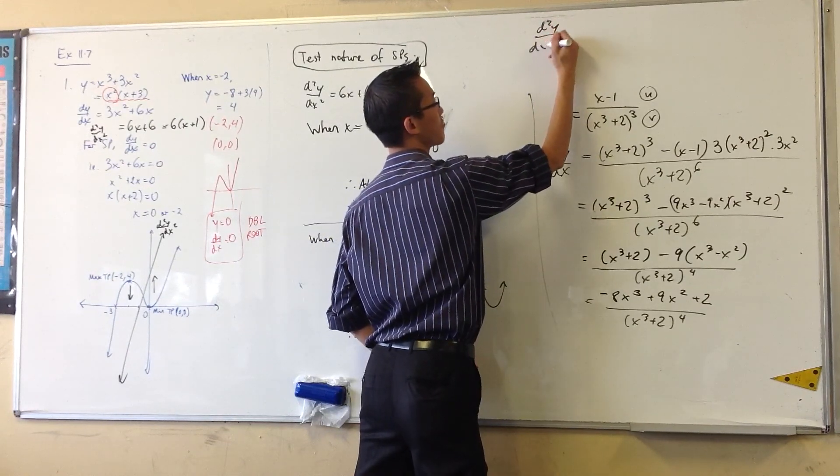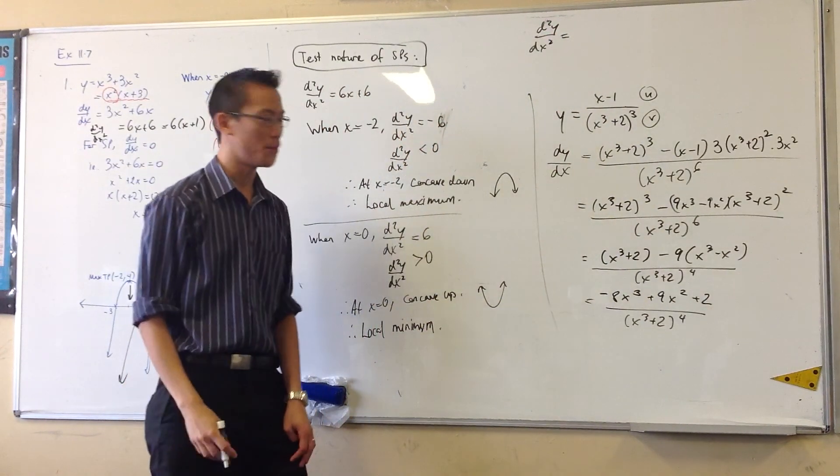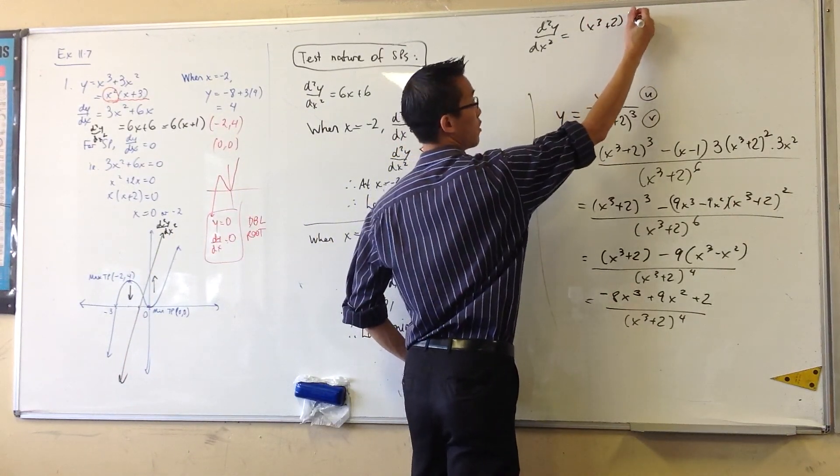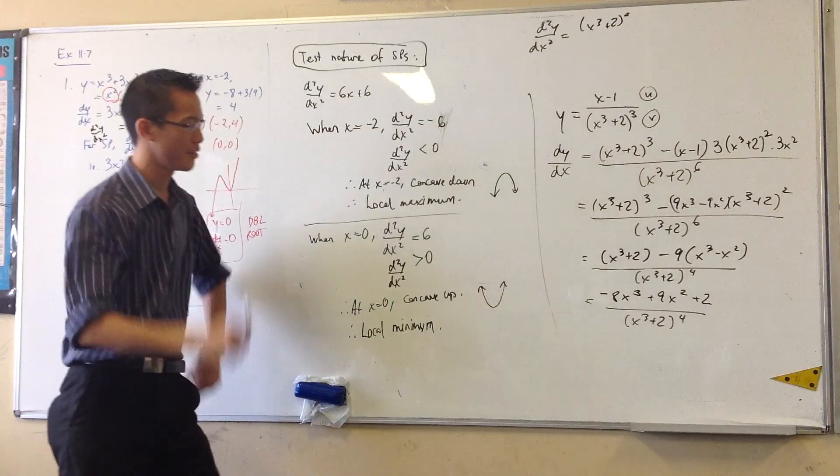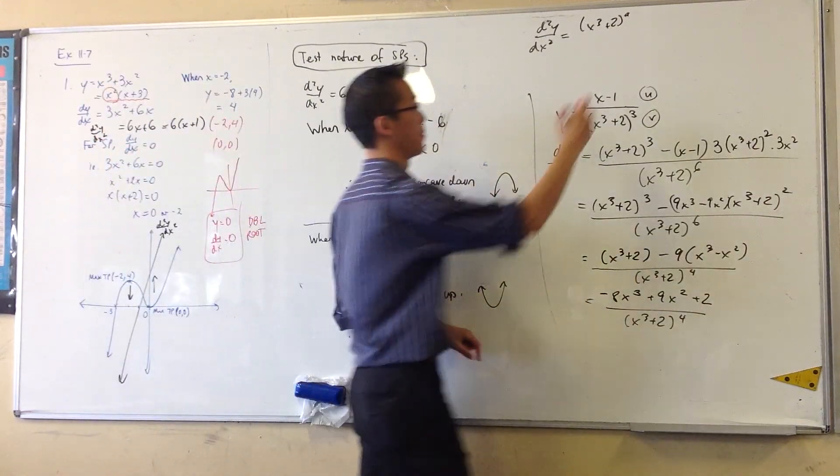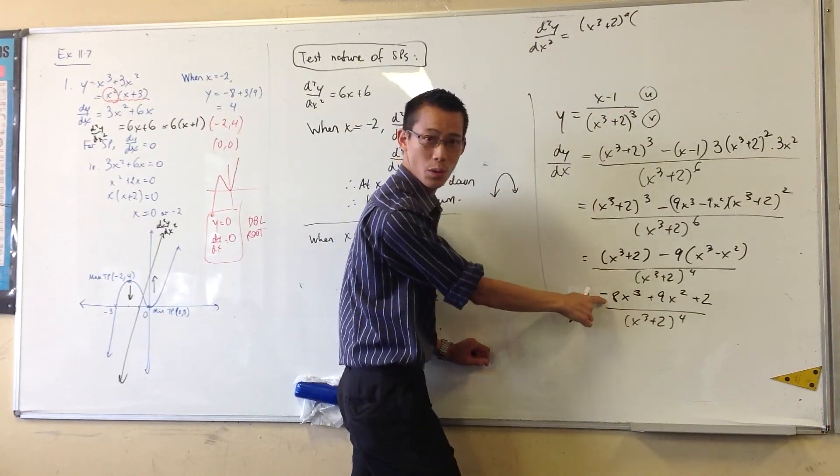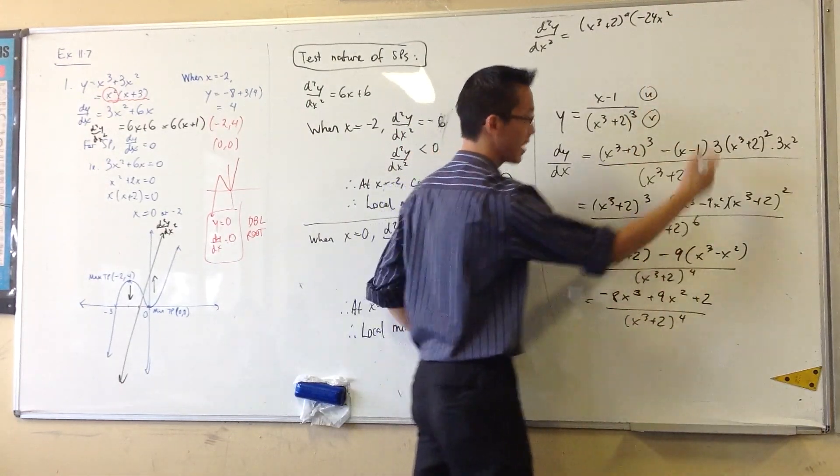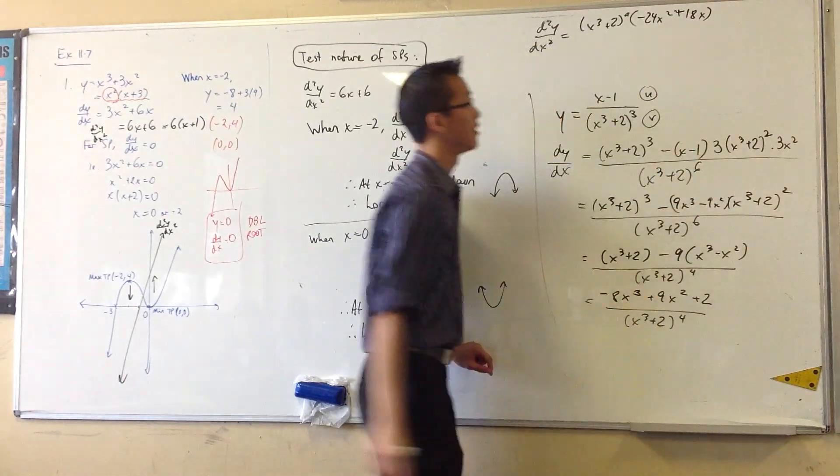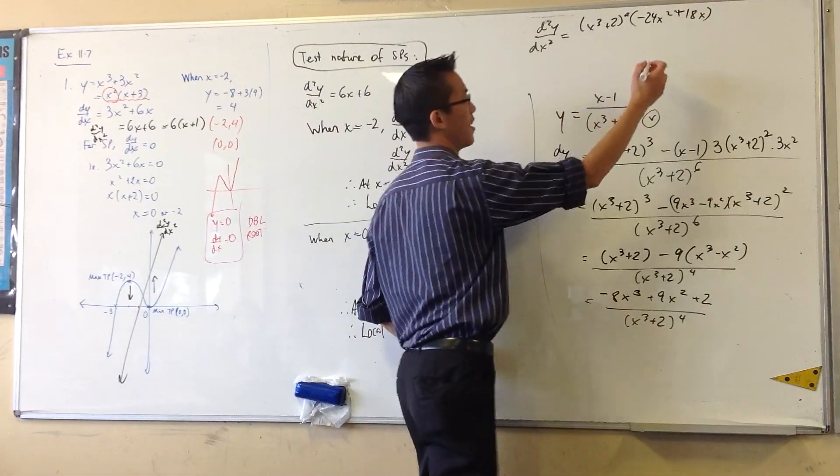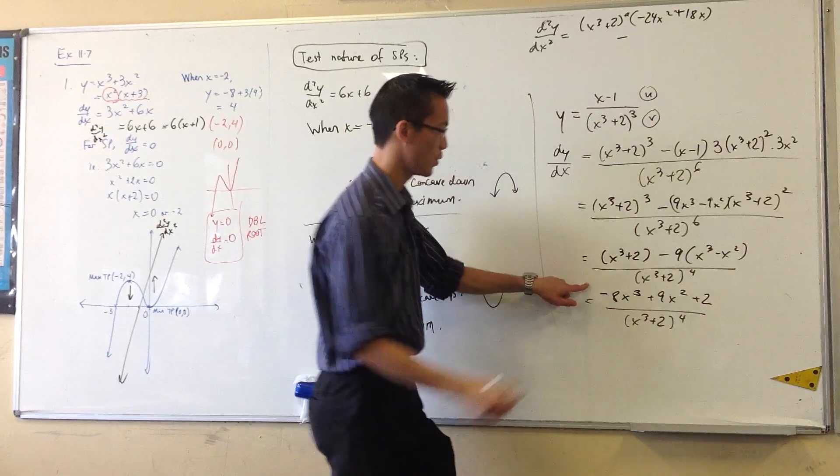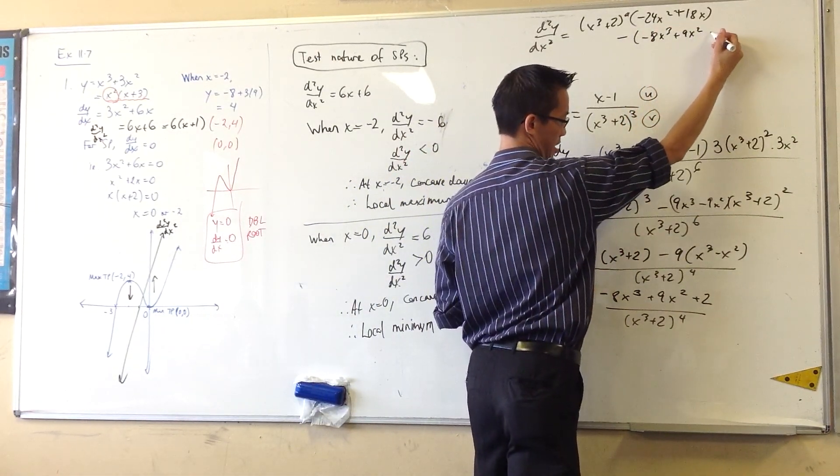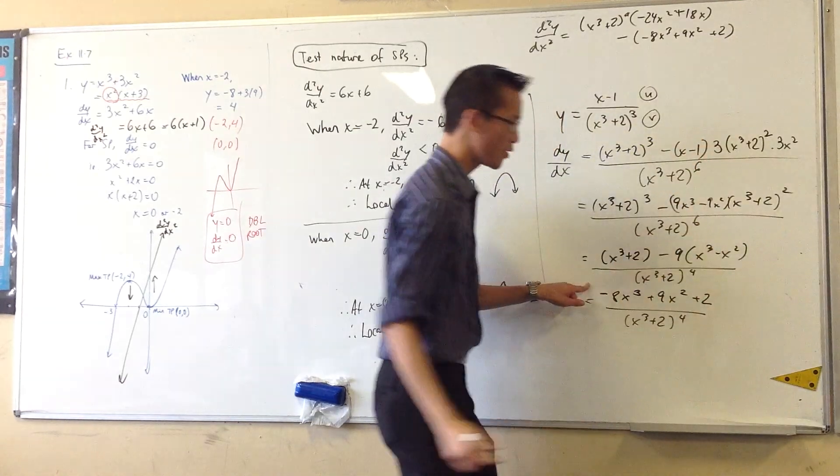v is x cubed plus 2 to the 4. u dash is minus 24x squared plus 18x. That's v, u dash, minus u, oh man, minus 8x cubed plus 9x squared plus 2. You know those points where you're like, it seemed like a good idea at the time.